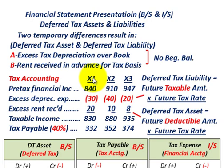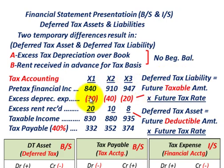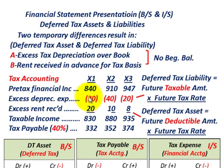We'll look at three years — X1 through X3 — starting with pre-tax financial income. Moving to the tax liability, we have excess depreciation expenses, which is a deferred tax liability. We're taking the depreciation in the current year but won't be able to depreciate it in future years, which will increase income. The cumulative amounts over the three years are $30,000, $40,000, and $20,000 (all in thousands of dollars). The deferred tax liability is defined as the future taxable amount times the future tax rate.